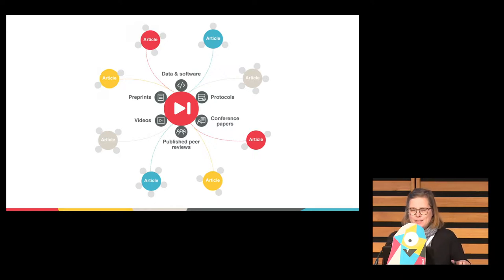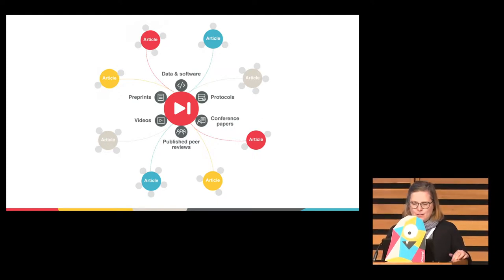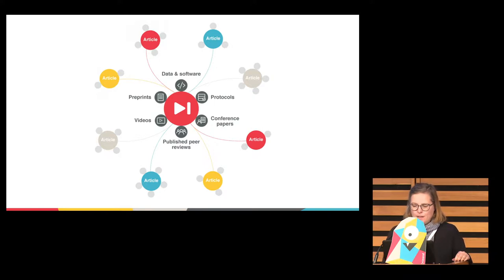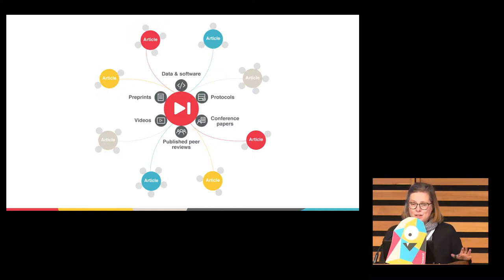As you know, we have this vision of the research nexus where we connect articles and other research outputs to data, preprints, videos, protocols, and that sort of thing — all through the power of persistent identifiers. It's a vision and it's a reality for some things but not for others, and that is due partially to the way we handle content types.